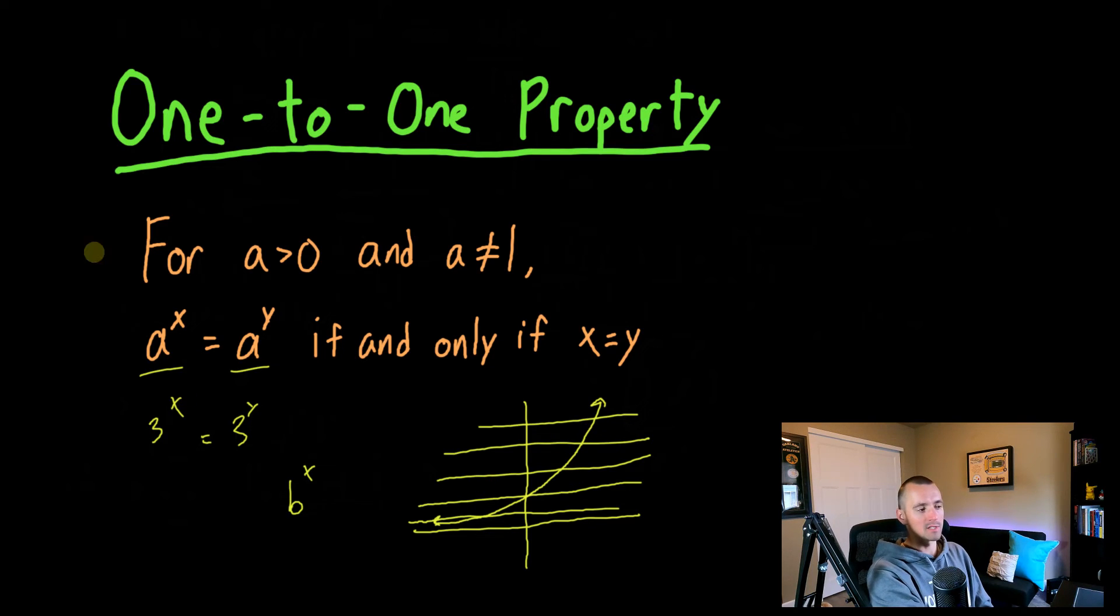So that means this exponential function has an inverse function, which really what that means is the function itself is one-to-one. So one input matches to exactly one output and every output matches to exactly one input.